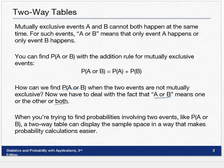When you're trying to find probabilities involving two events, like probability of A or B, a two-way table can display the sample space in a way that makes probability calculations easier.